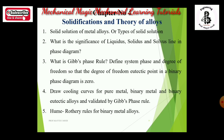Another important theory is Hume-Rothery rules for binary metal alloys. Either Gibbs phase rule or Hume-Rothery rules — one of these two theories has maximum chance in the examination. Also, phase diagram with the lever arm rule for 4 marks.